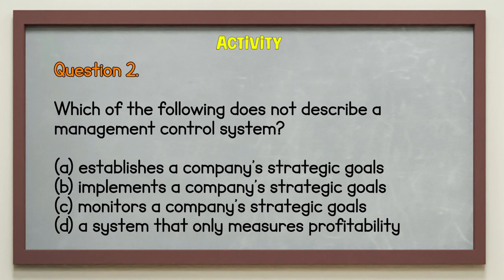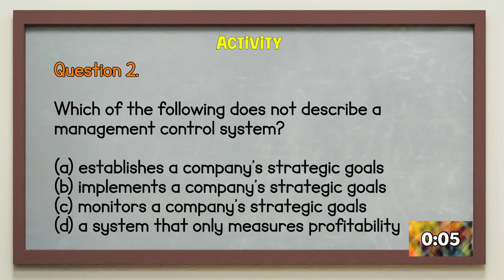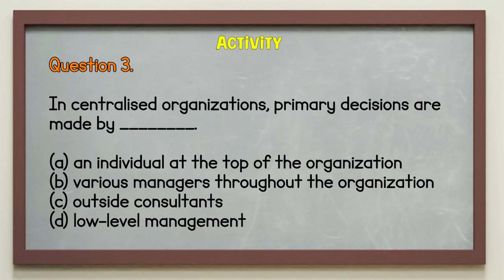Question 2: which of the following does not describe a management control system? A. Establishes a company's strategic goal. B. Implements a company's strategic goal. C. Monitors a company's strategic goal. D. A system that only measures profitability. Question 3: in centralized organizations, primary decisions are made by — A. an individual at the top of the organization, B. various managers throughout the organization, C. outside consultants, or D. low-level management.